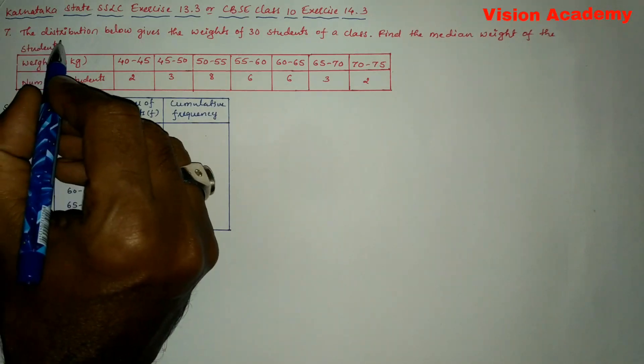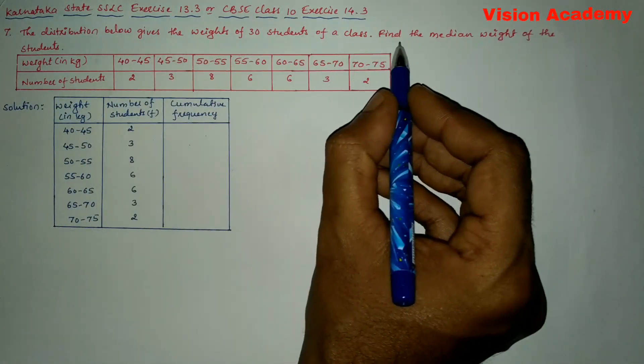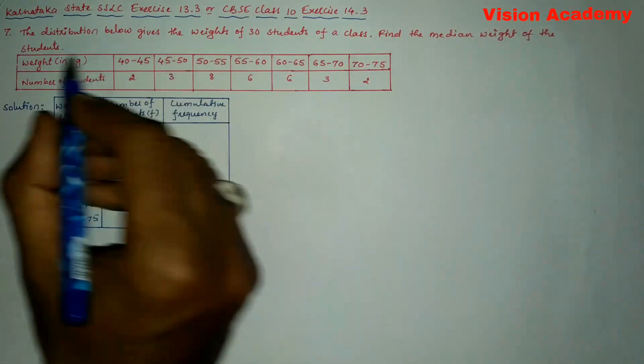Question number 7. The distribution below gives the weights of 30 students of a class. Find the median weight of the students.